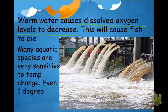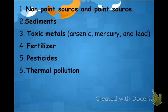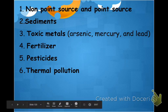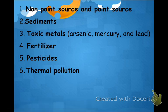The six main forms of pollution we covered are: point source, non-point source, sediments, toxic metals, fertilizer, pesticides, and thermal pollution. Make sure you're familiar with what each causes and how they get into the water. We have a little bit more to cover on pollution and then that will be it.